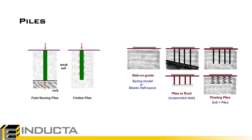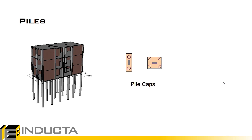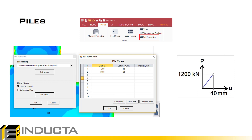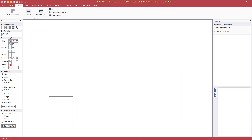In summary, we can model the slab on ground using the spring Winkler model or soil structure interaction in a linear elastic half space. We can model piles on rock as a suspended slab, or floating friction piles with spring support at the pile locations. To input pile properties in SLB, go to soil properties, select columns as piles, hit pile types, and then input loading and settlement values.